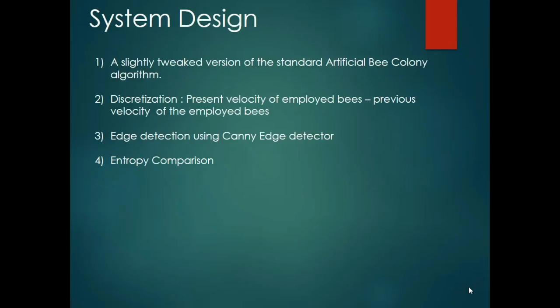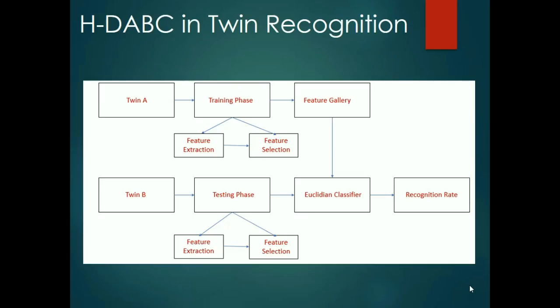It is then followed by edge detection using the Canny edge detector and the entropy comparison technique. Initially, the food sources are initialized between the upper and lower limits. Then the fitness of each food source is evaluated and the employed bees phase is initialized.